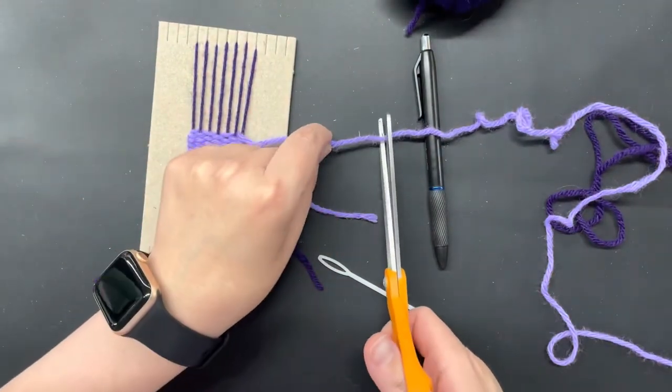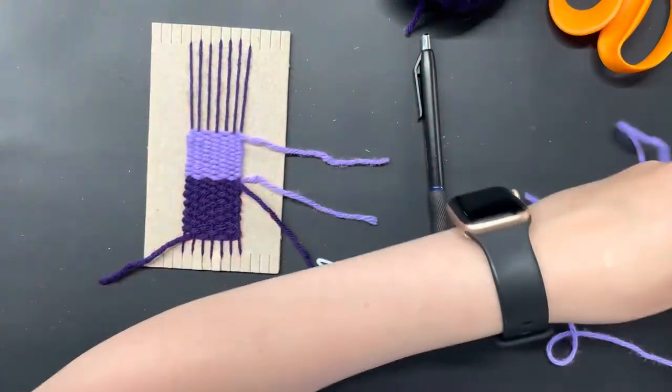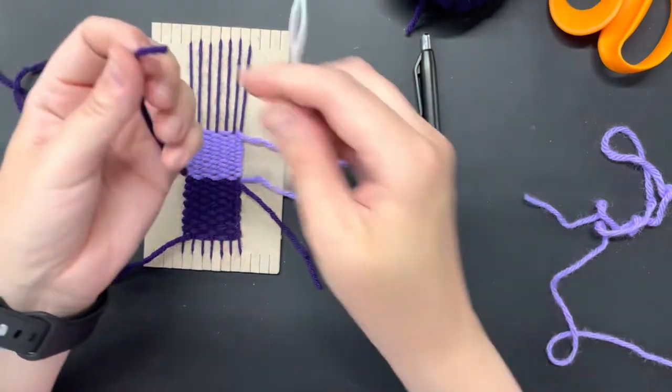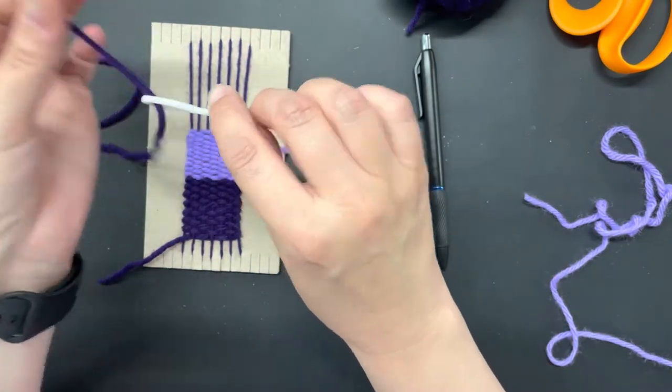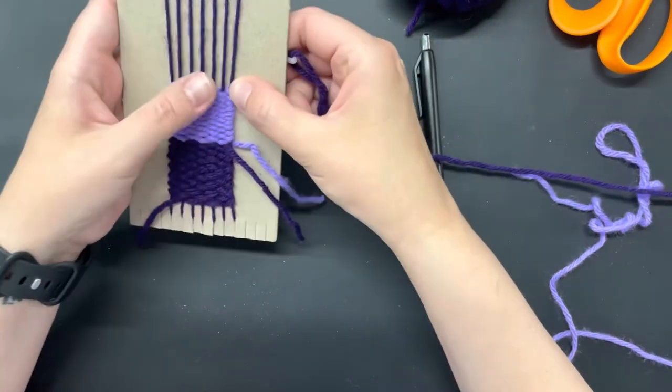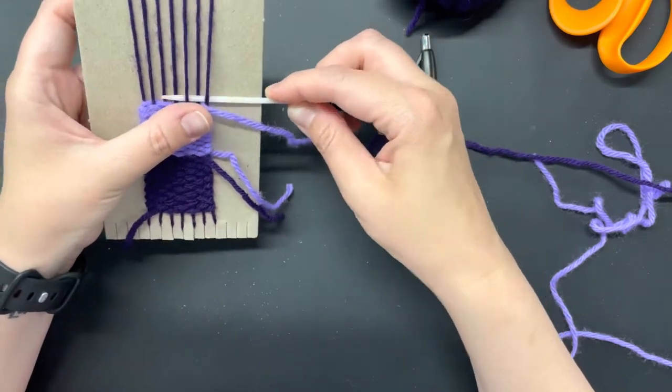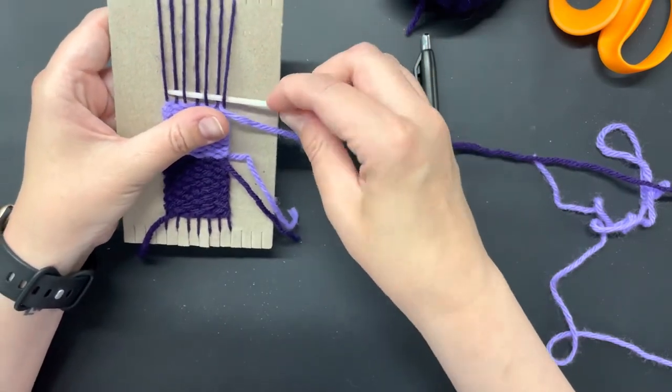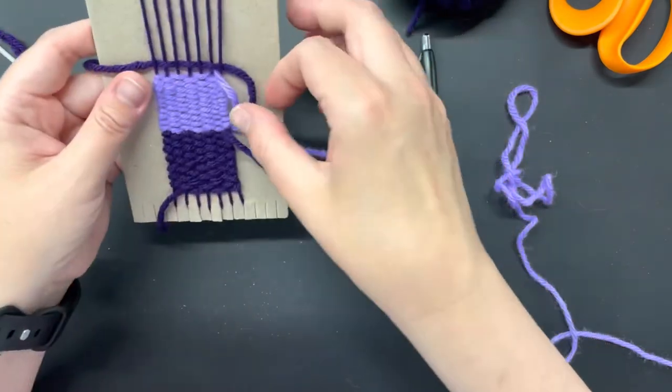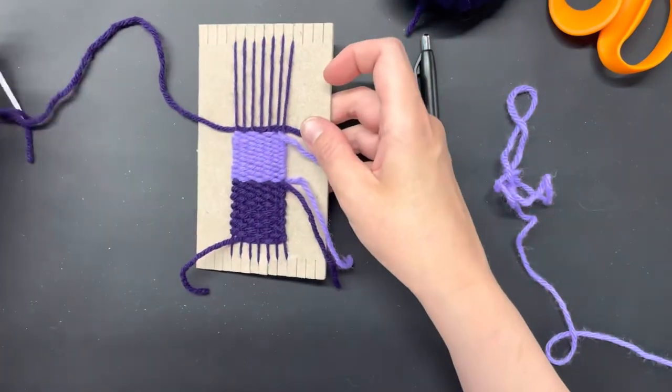So when I'm done using this color, I'm going to cut off my end, leave this little tail. I can go ahead and take my yarn and thread it through my needle once again. And I'm just going to do the opposite of how I ended. So this goes over, so I'm going to do under, over, under, over. And with each color change, you're just going to leave your tail, and I'll show you how to connect those tails in through the back.